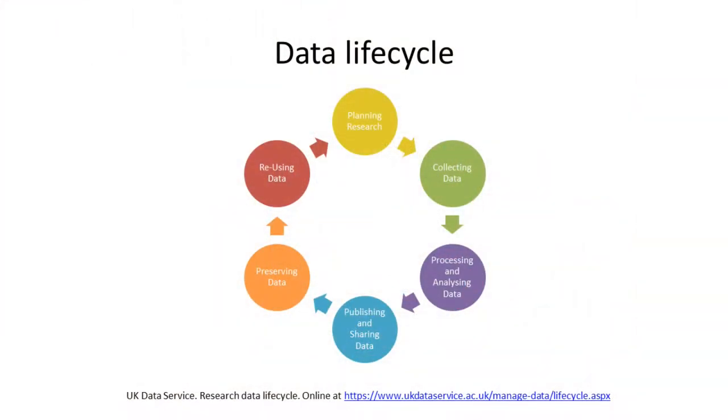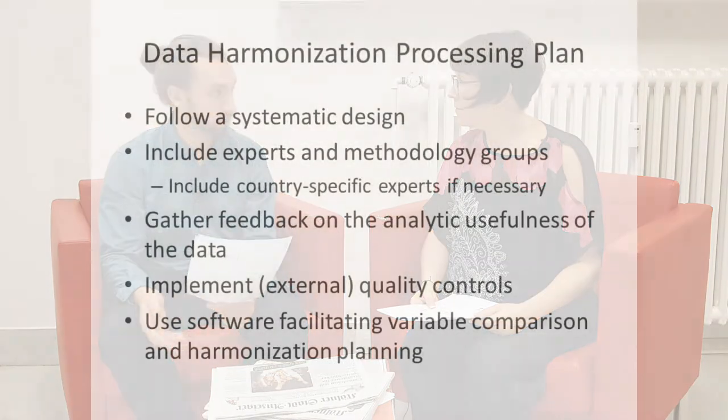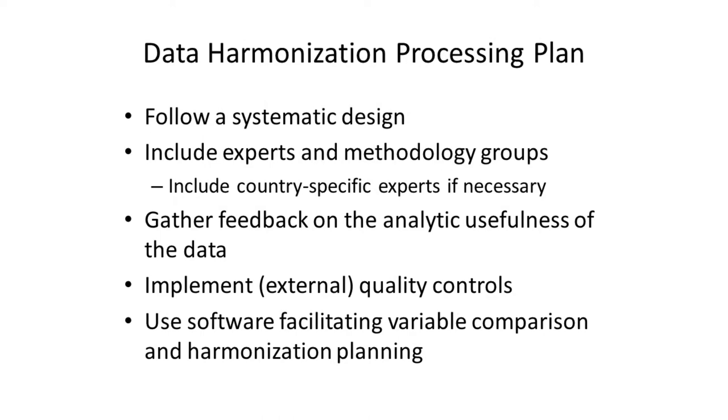In the last video we focused a lot on actual variable harmonizations and the variables themselves, but in fact harmonization is something that can happen throughout the data research life cycle. Through all the data life cycle, in each step you might consider harmonizing that step. Before you go into the field collecting your data, you might already think about harmonizing the data collection methods and the questionnaires. This can include a lot of work, so it is advisable to follow a systematic design and to include expert or methodology groups if you want to really harmonize big parts of your data life cycle. Ideally you can also gather feedback on the analytical usefulness of your data and implement quality controls, which we'll have a look at later on.